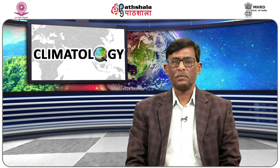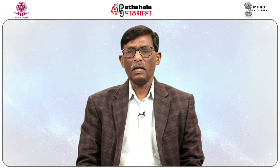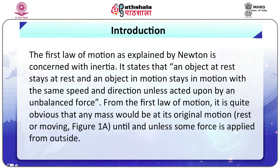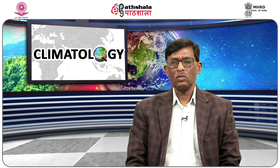Now let us talk about atmospheric circulation. There has to be some reasons for something to happen. The first law of motion, as explained by Newton, is concerned with inertia. It states that an object at rest stays at rest and an object in motion stays in motion with the same speed and direction unless acted upon by an unbalanced force. Any mass would remain at its original motion until some force is applied from outside. Acceleration or velocity is determined by the quantum of force applied and the mass of the object.